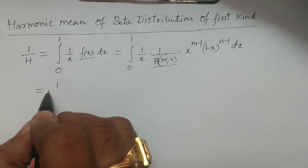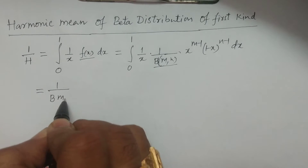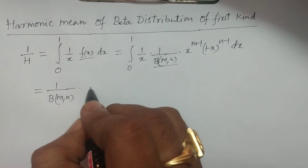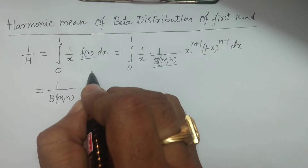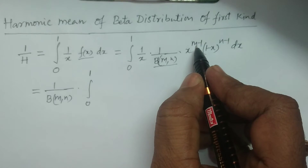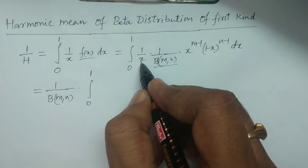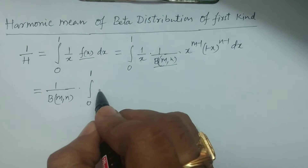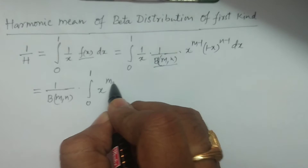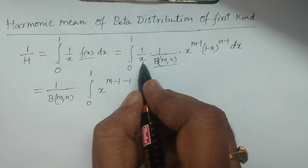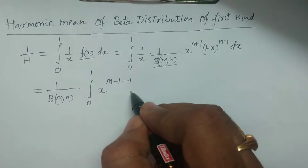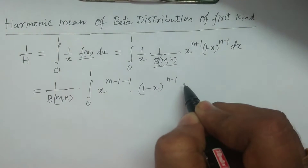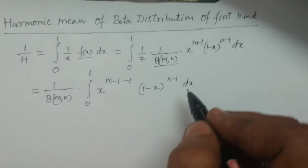So therefore, we have 1 by beta(m, n) multiplied by integral 0 to 1. This is x power m minus 1, and 1 by x which means x power minus 1. If you add the powers of x, we get x power m minus 1 minus 1, multiplied by 1 minus x whole power n minus 1 dx.